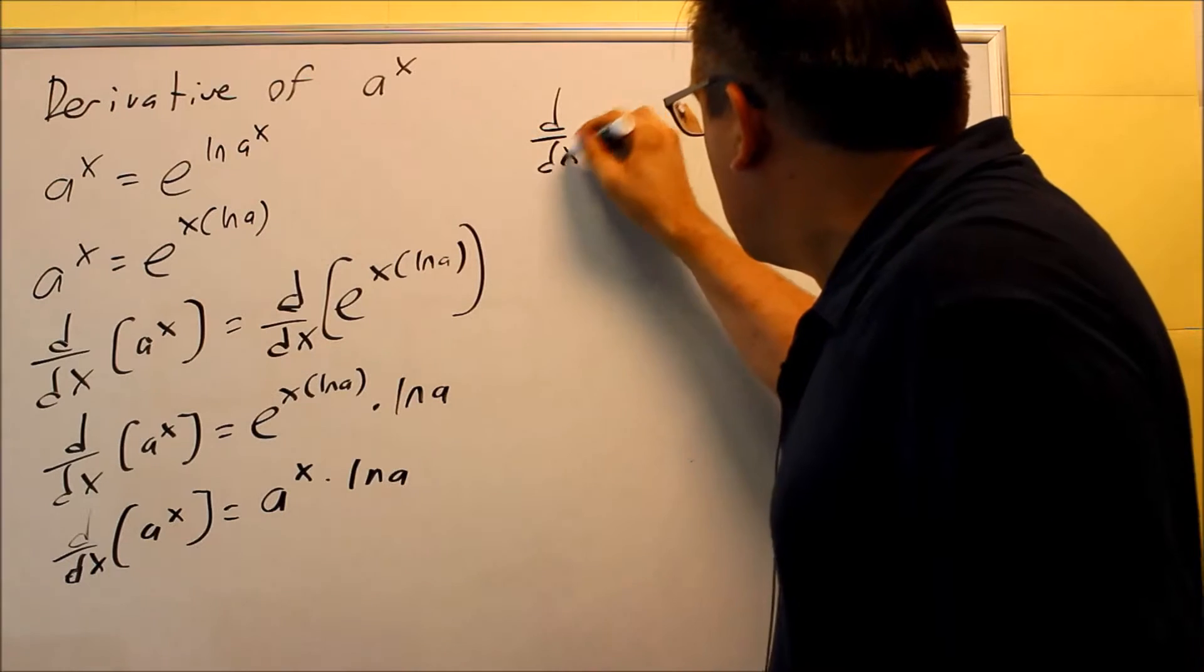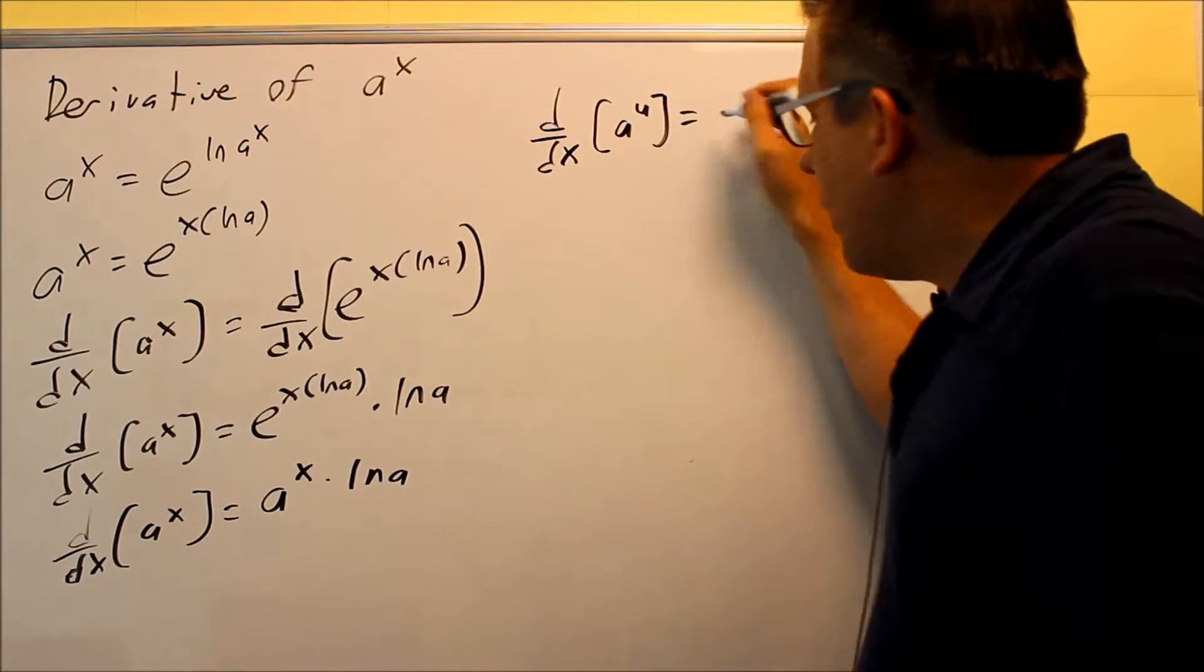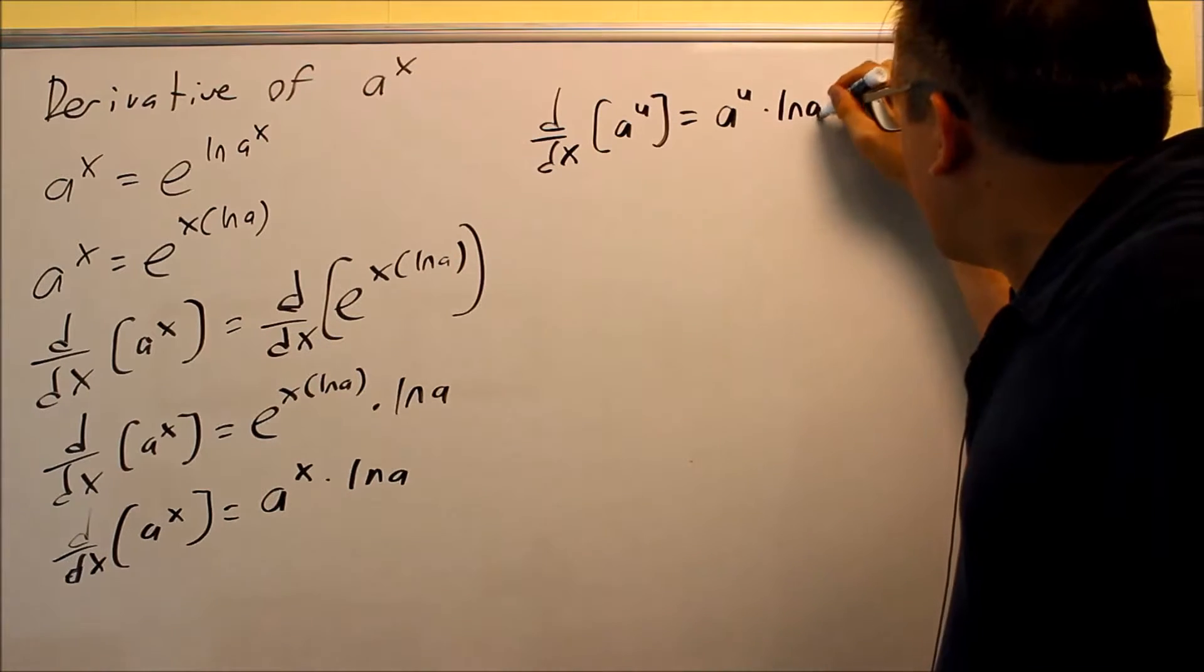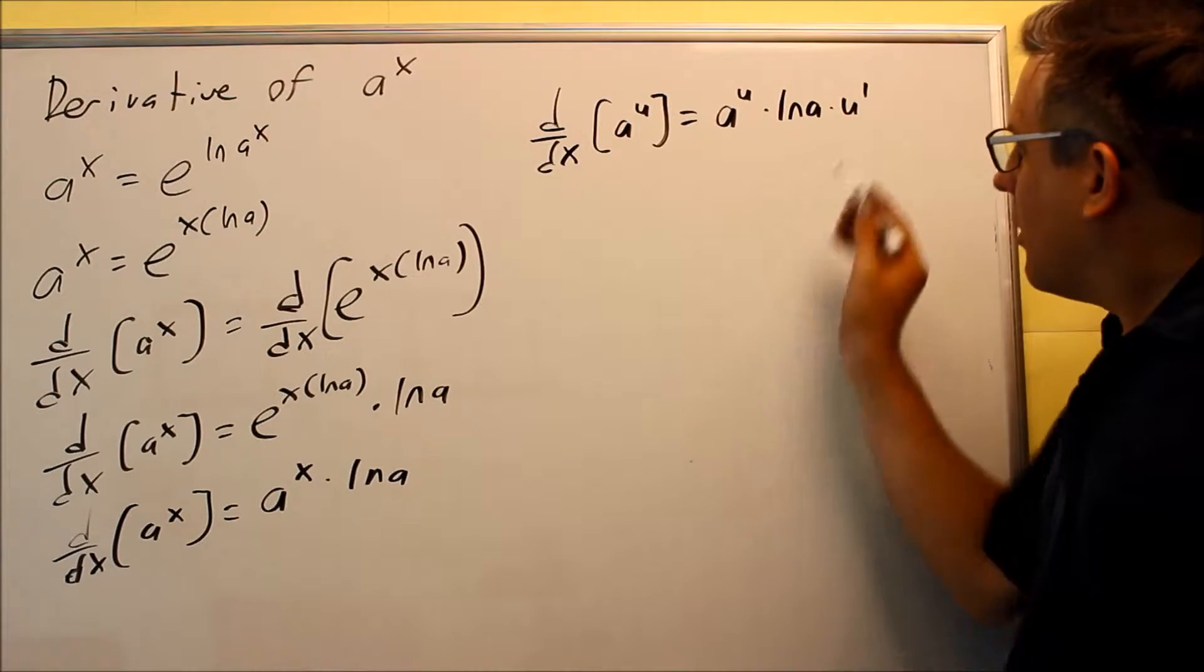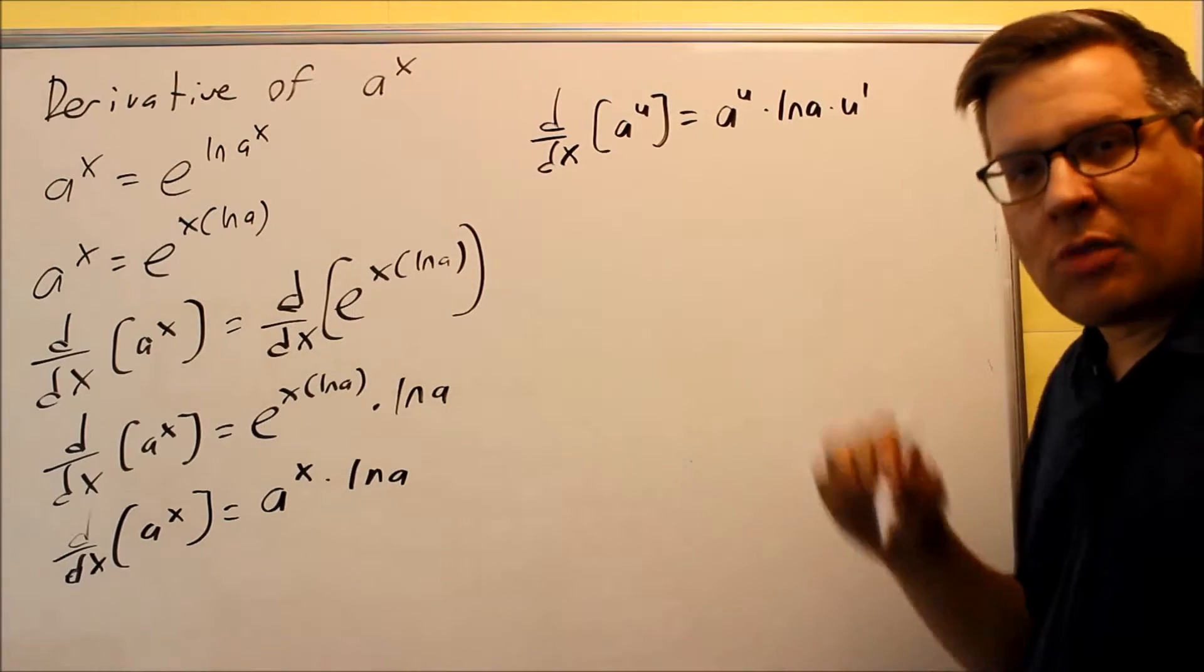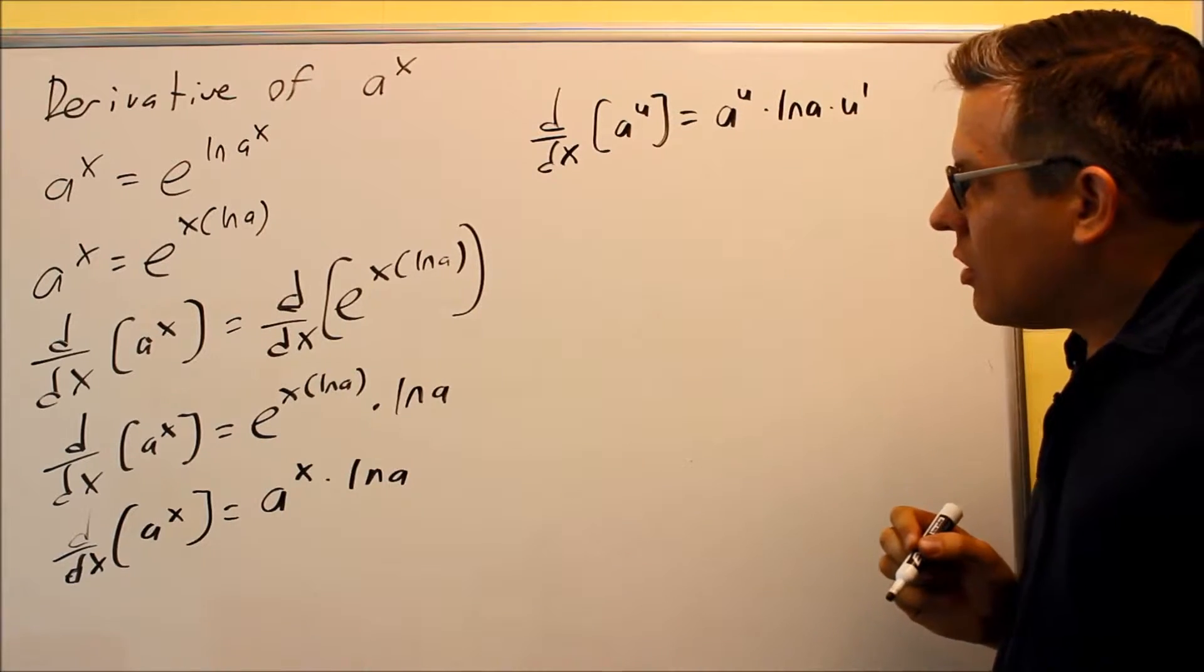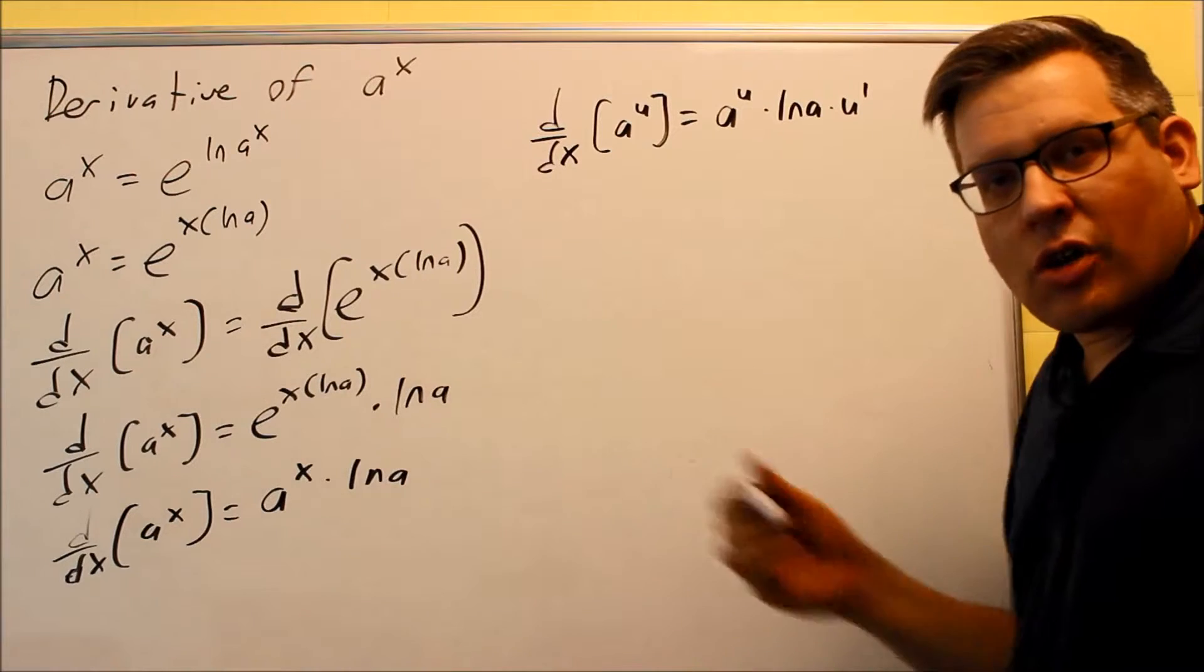Equivalently, I could also write it this way. If I have a to the u, then this is equal to a to the u times ln a, but then you also have to multiply it by the derivative of the exponent. So this would be what it would look like if you have something inside like, you know, maybe it's a 2 to the x squared or something like that. That's going to be the formula that you want to use. So, now that we've taken a look at both of these forms, let's take a look at a few examples.